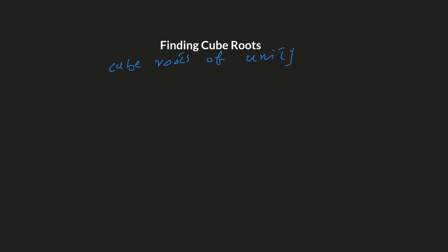First of all, we write X equals the cube root of unity. Unity means one. We write this in exponential form as one to the power of one-third. Taking the cube on both sides, we get X cubed equals one.